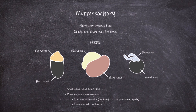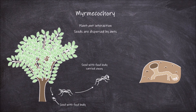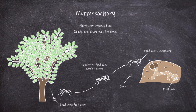They also have chemical attractants that attract the ants to them. Once the ant has found the seed, the ant then carries it back to its nest away from the parent plant. Back at the nest, the food body is removed from the seed. This food body is then used by the ants, most importantly to feed the larvae in the nest.